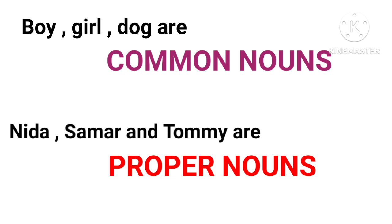Girl, boy, dog — these are common words which we use for a girl, a boy, or a dog. But if we use proper names, we call them proper nouns. Names like Nida, Sameer, and Tommy are proper nouns.